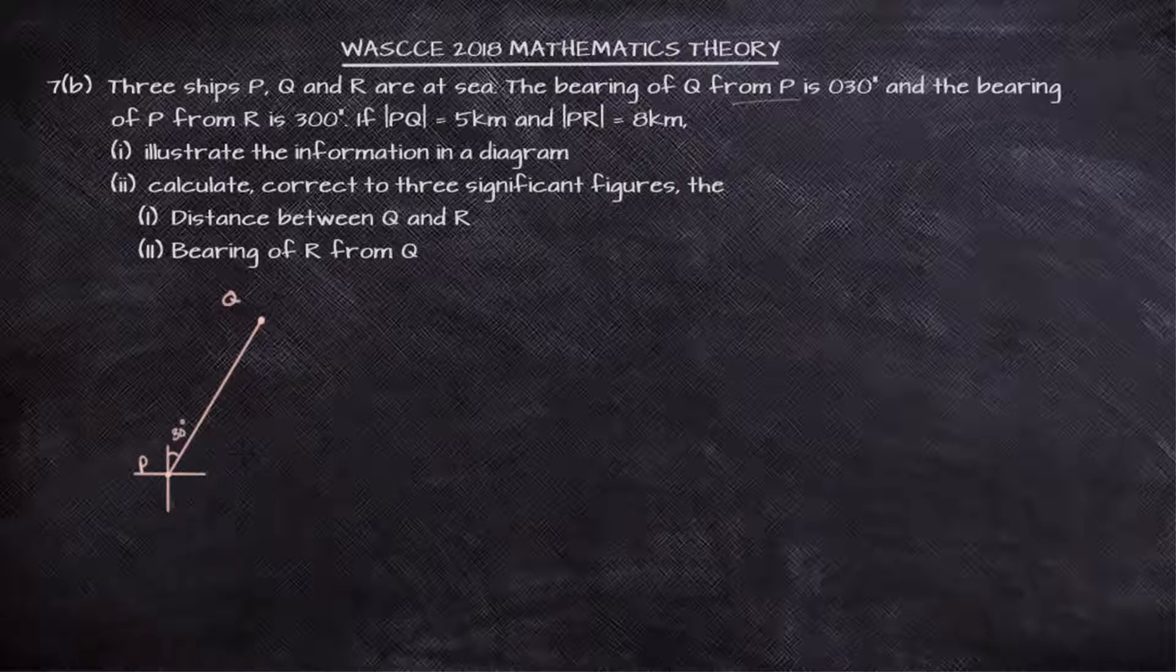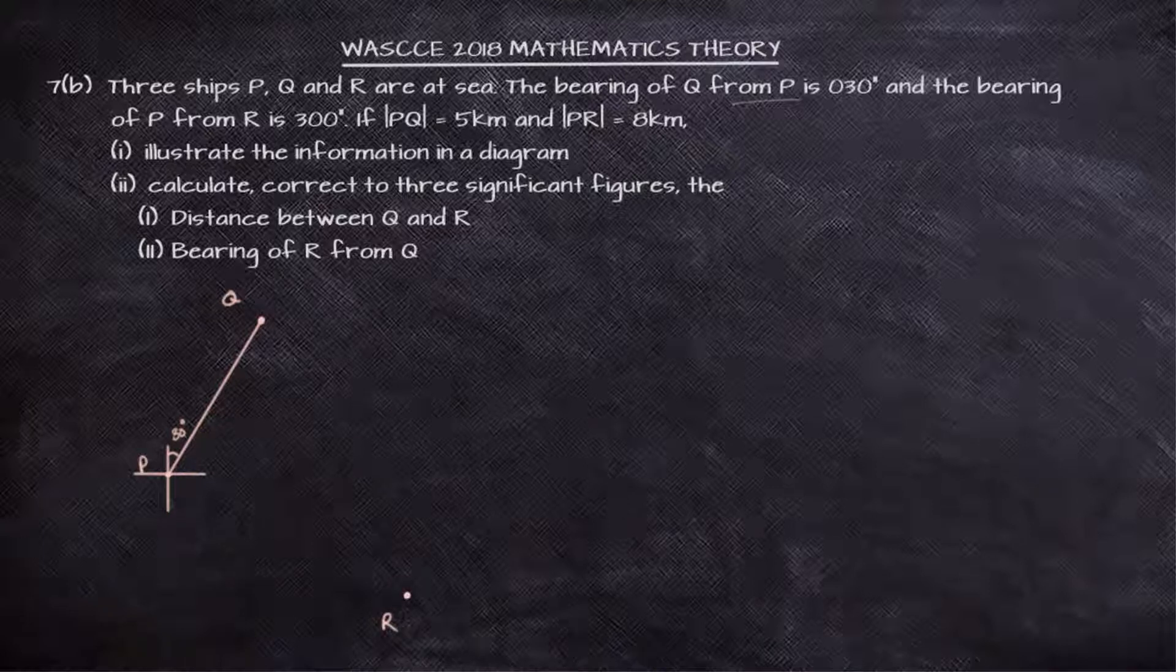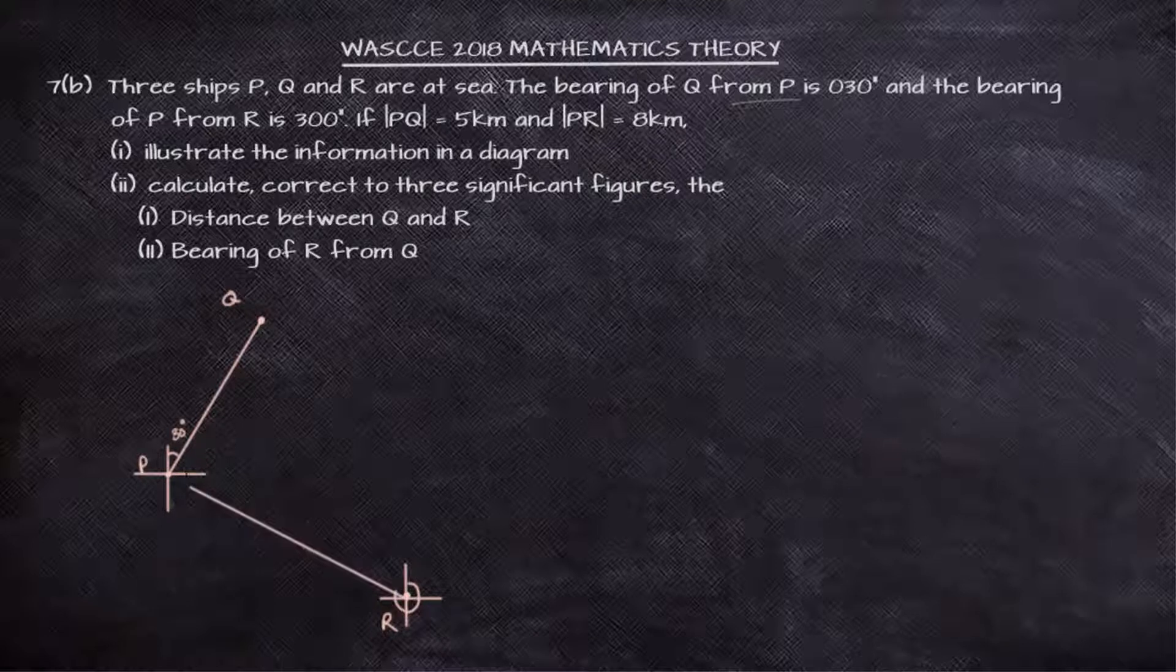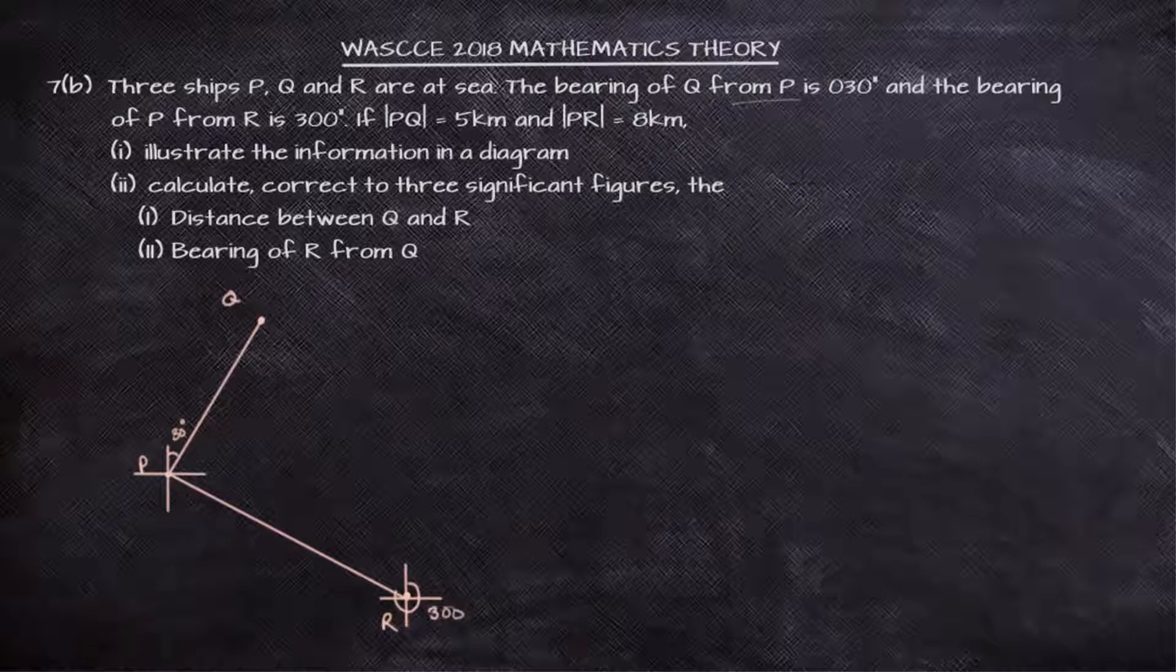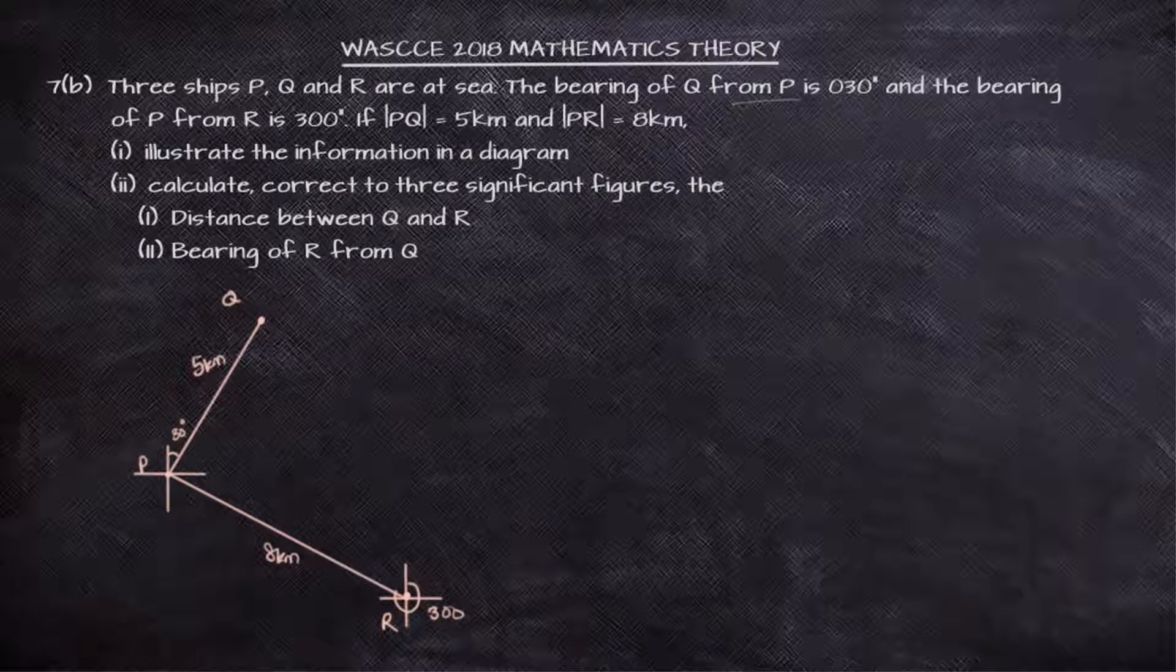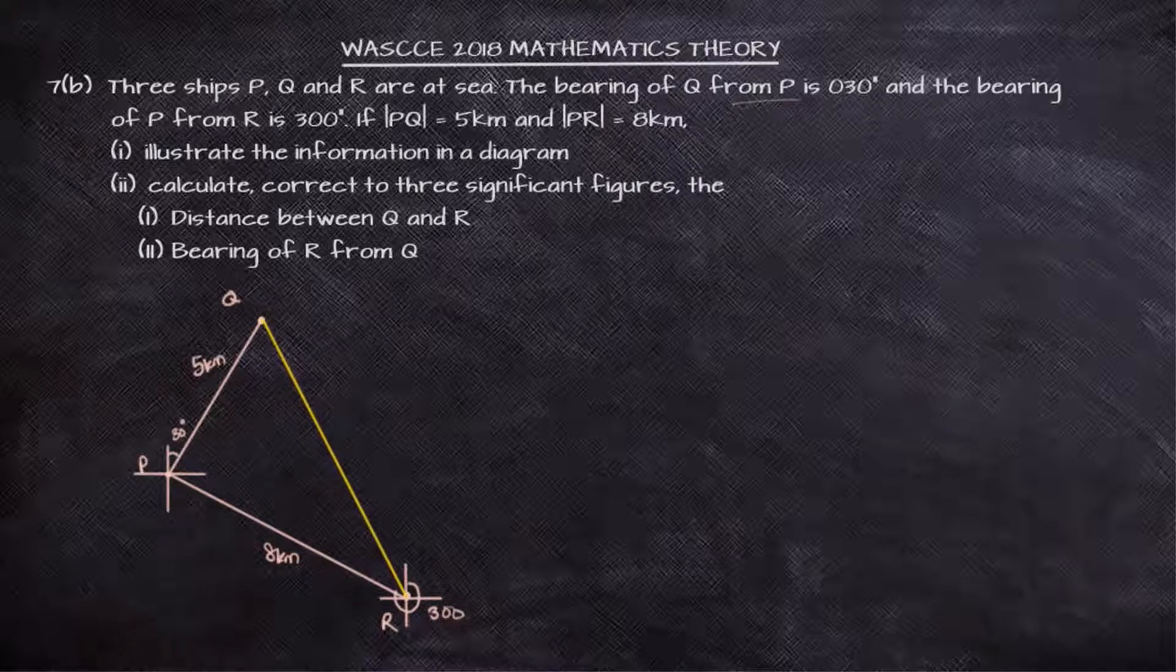We also told that there is another point R, which is going to be down in respect to P. The bearing of P from R is 300 degrees, so you have to measure 300 from the north. The distance between R and P is 8 kilometers. Five kilometers between P and Q, and 8 kilometers between R and P. This is the diagram that we are asked to illustrate. We can complete the triangle by joining line Q and R.